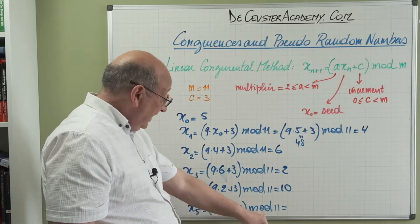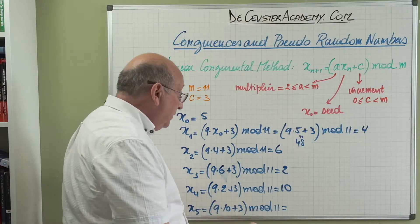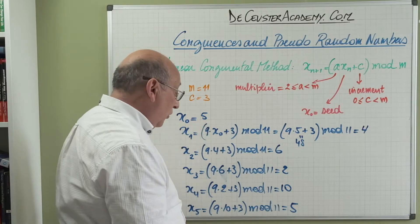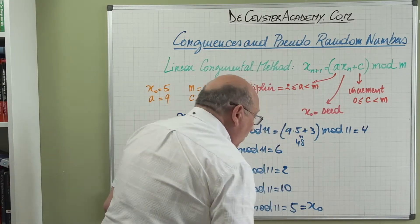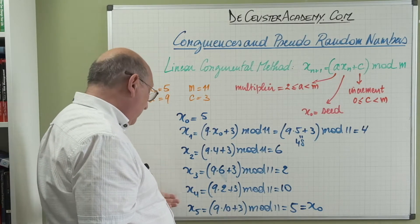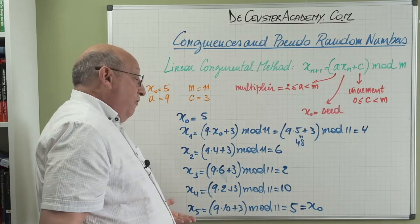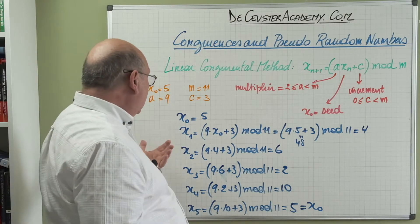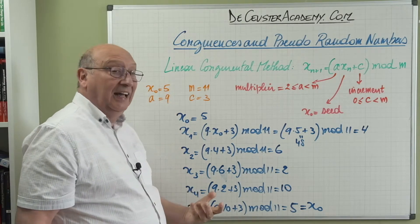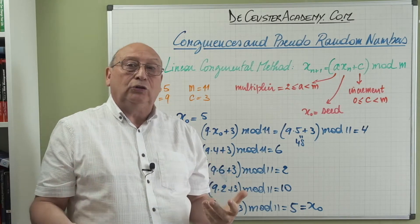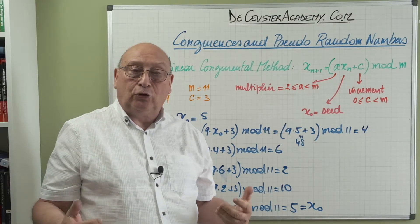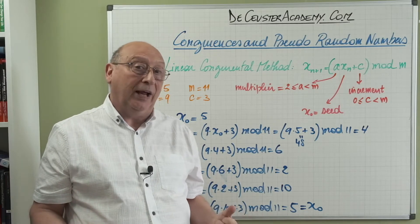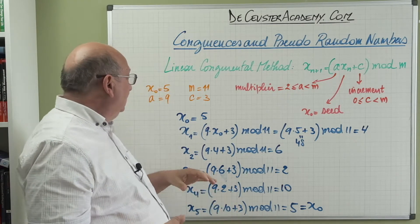But notice: x_5 = 5, which equals x_0. So from here we have a repetition. We only generated five pseudo-random numbers before cycling back. With these parameters, this is clearly not sufficient to create a large set of pseudo-random numbers, so we need to find other parameter choices.